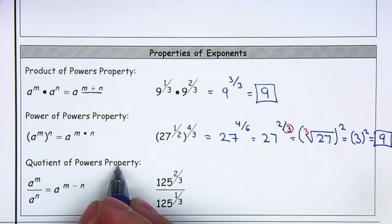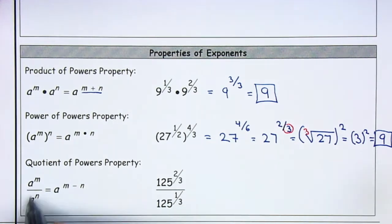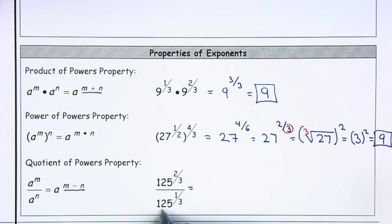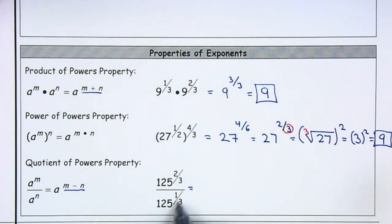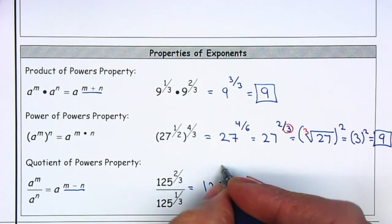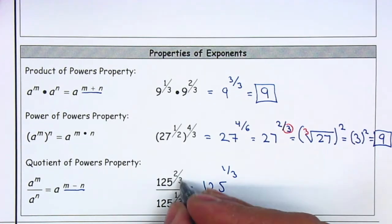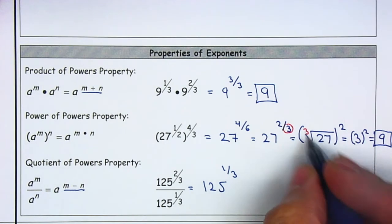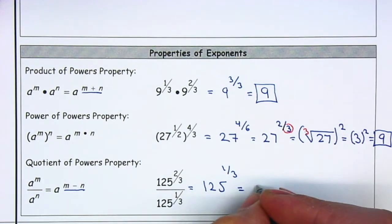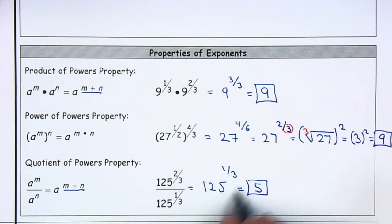For the quotient of powers property, if we have two terms and they have the same base, we can subtract the exponents. In this case they have the same base, 125, top and bottom. We need to subtract. Remember, to subtract we need to have the same denominator — they do. So we can just have 125. 2/3 minus 1/3 will be 1/3: 2 minus 1 is 1, the denominator stays the same. We can rewrite it as the cube root of 125, which is equal to 5. So I want you guys to start thinking that 125 to the 1/3 is automatically equal to 5.